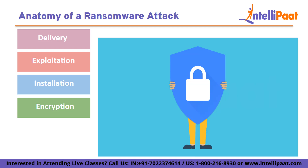Encryption: one of the primary objectives of ransomware is to encrypt the files on the infected system. It uses strong encryption algorithms to scramble the files, making them inaccessible without a decryption key. This step is crucial to ensure that victims are unable to access their own data.